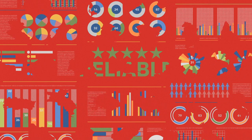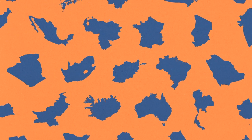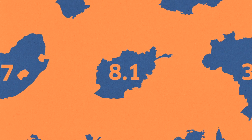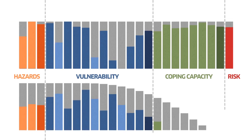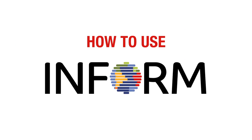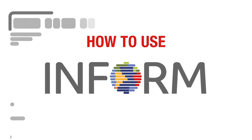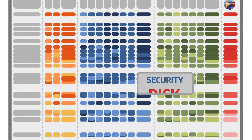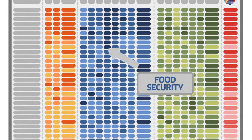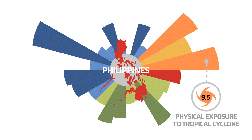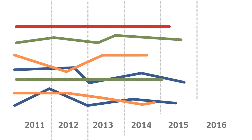INFORM creates a risk profile for every country. Each has a rating between 0 and 10 for risk and all of its components, so it's easy to compare. You can prioritize countries by risk or any of its component parts, and you can decide how best to reduce risk and monitor risk trends.